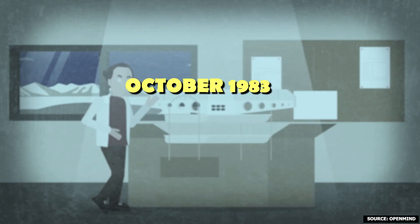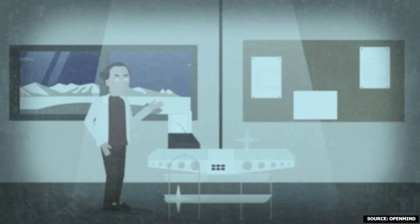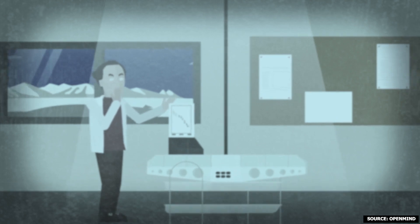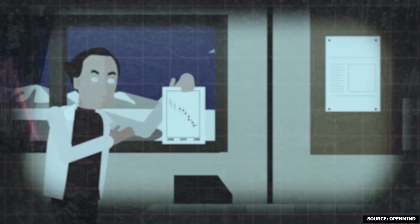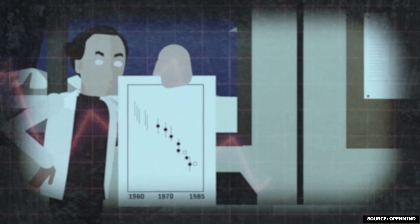Returning in October 1983, armed with a brand new machine, Joseph hoped for a different result. Yet the readings spelled an even more disturbing tale. The ozone had declined further.